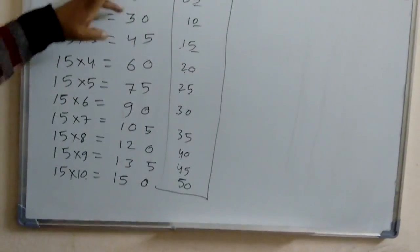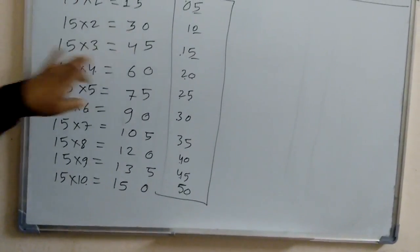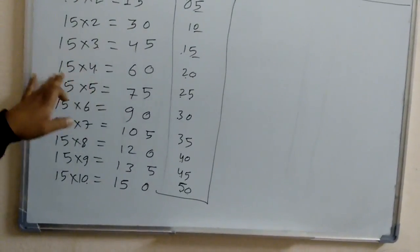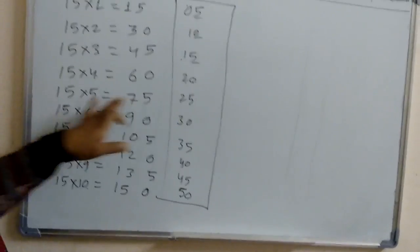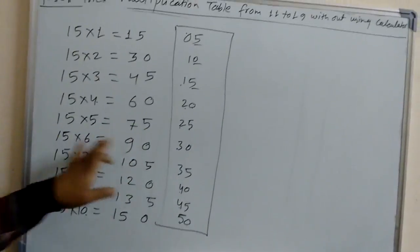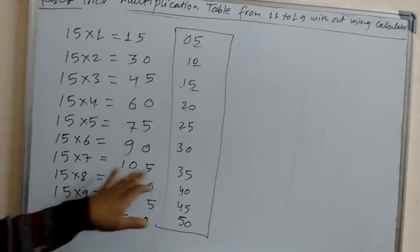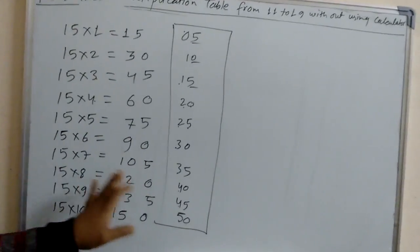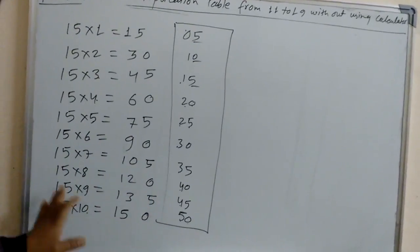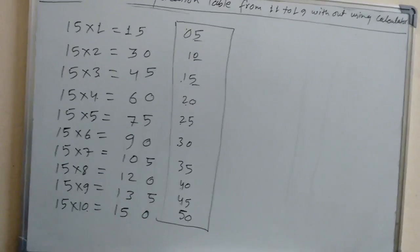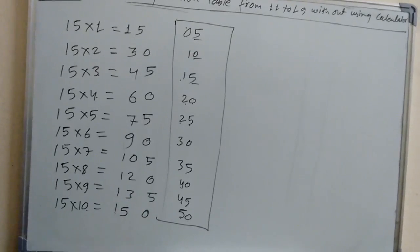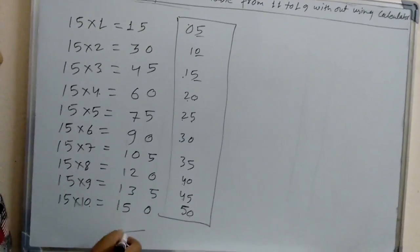So 15×1 is 15, 15×2 is 30, 15×3 is 45, 15×4 is 60, 15×5 is 75, 15×6 is 90, 15×7 is 105, 15×8 is 120, 15×9 is 135, 15×10 is 150.